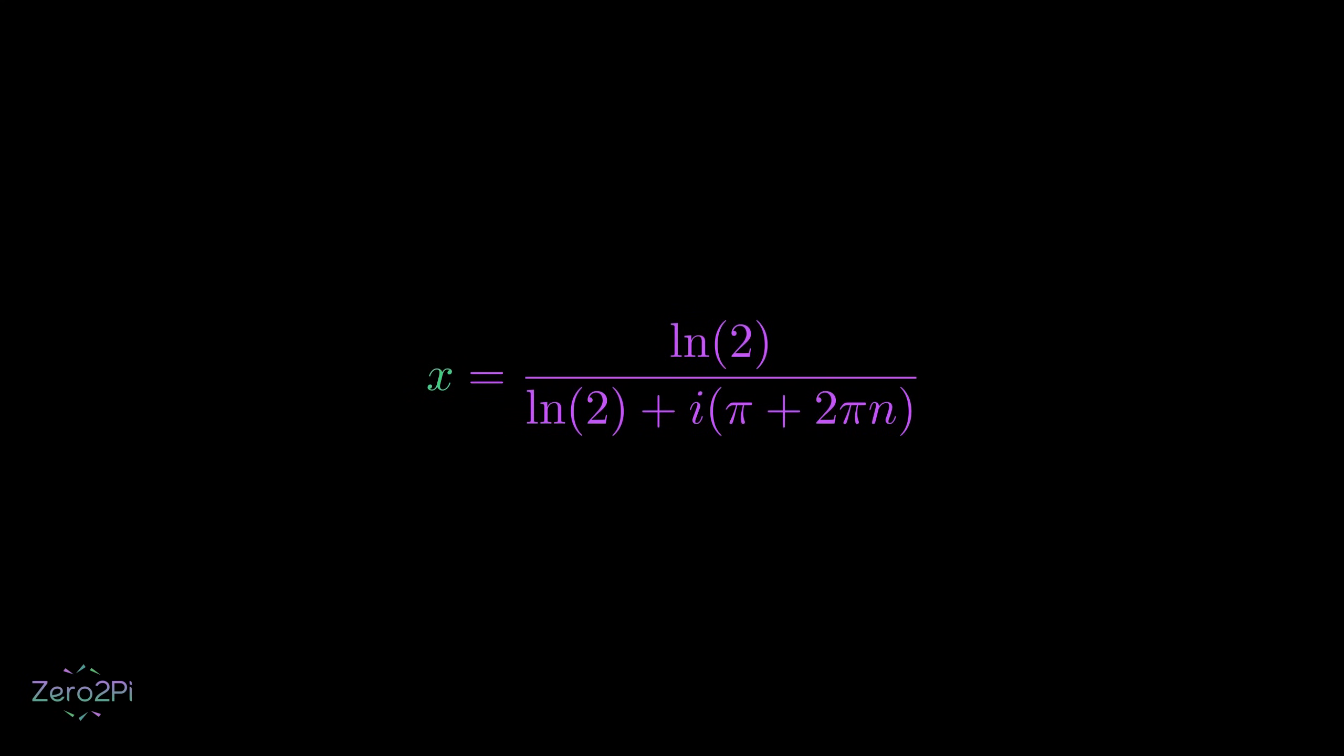To separate this into real and imaginary parts, I'll multiply top and bottom by the conjugate of the denominator. After expanding and simplifying, we get x equals ln(2)² divided by [ln(2)² + (π + 2πn)²] minus i times ln(2)(π + 2πn), all divided by the same denominator.